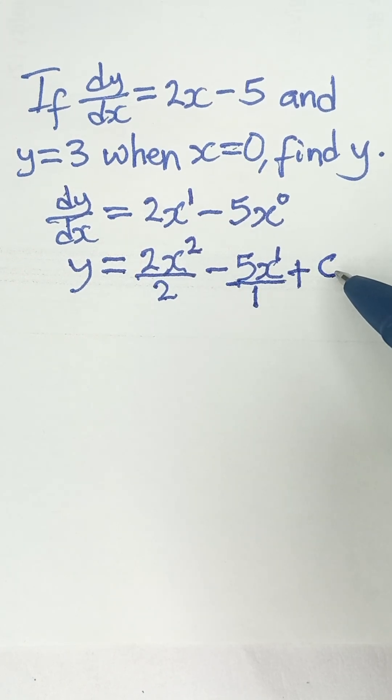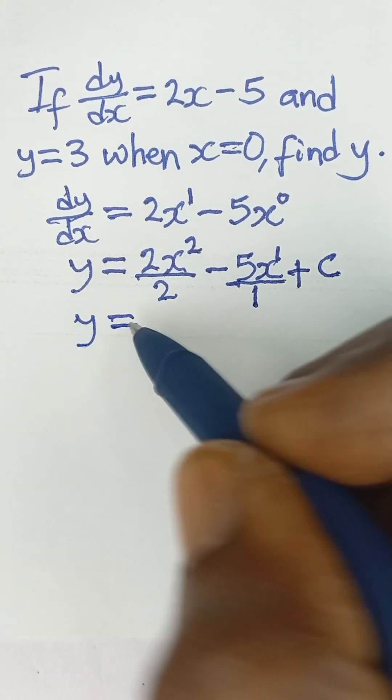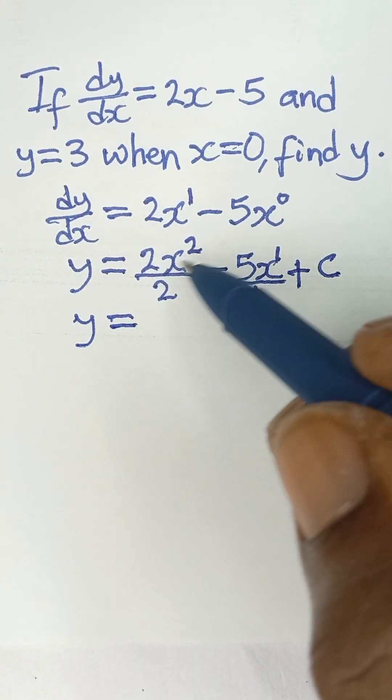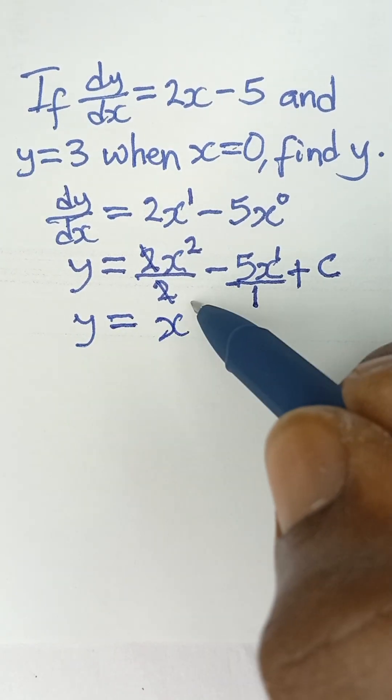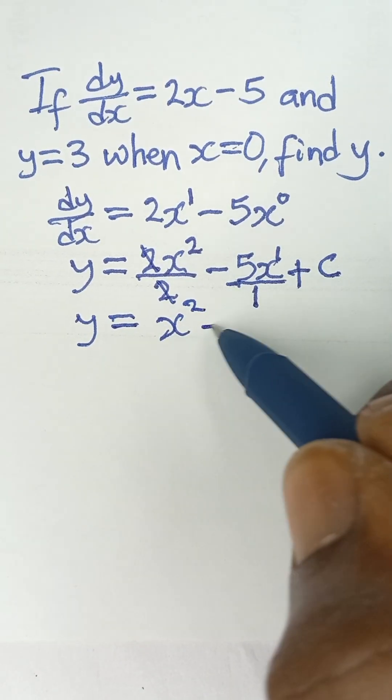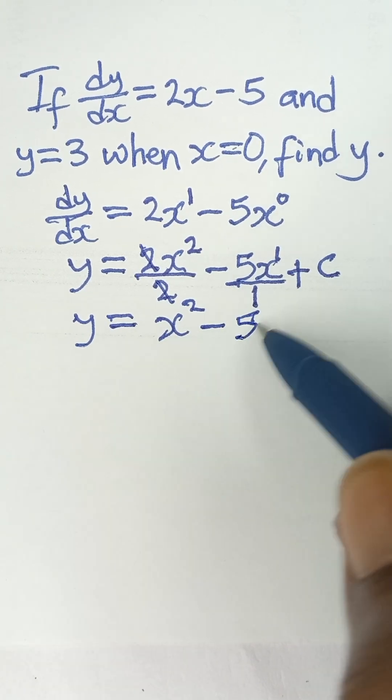We don't know this value, but we are going to obtain it. So we have y is equal to, this is given to us as 2, we cancel the 2, and then we have x squared minus 5x raised to the power 1 is 5x. Then divide by 1, it remains 5x, and then plus c.